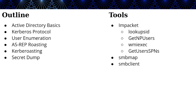Here's an outline of what we're doing tonight. We'll start with Active Directory basics — going over what it is and how it works. Understanding that is important for understanding why and how the Kerberos protocol is implemented. After that we'll do user enumeration against Active Directory, then AS-REP roasting, then Kerberoasting, and then dumping secrets from a machine after we've escalated our privileges.